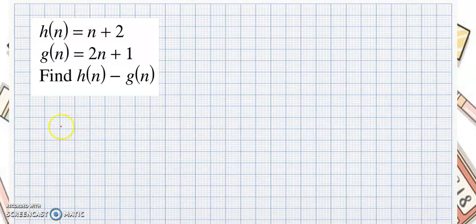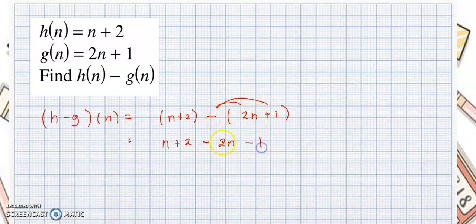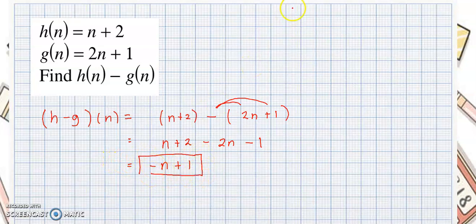Next example. We wanted to know what is h minus g of n. This would be the value of h, which is n plus 2, minus the value of 2n plus 1. Take note — we have subtraction here, so we distribute the negative sign. We copy the first function: n plus 2. Then negative times 2n is negative 2n, and negative times positive 1 is negative 1. We combine like terms: n minus 2n is negative n, and 2 minus 1 is positive 1. So the answer is negative n plus 1.